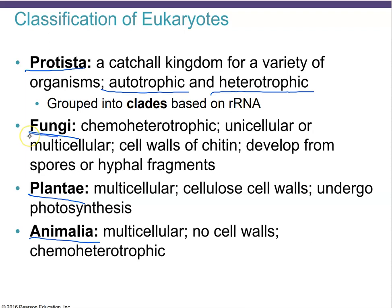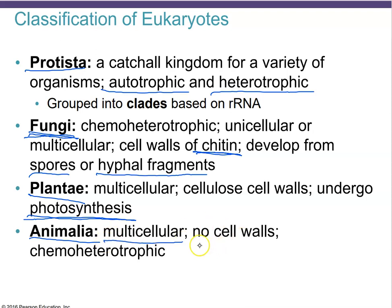Fungi are a group of chemoheterotrophic cells that can be unicellular like yeast, or multicellular like a fungus. Their cell walls contain chitin, and they develop spores and hyphae. Plants are typical green multicellular organisms with cellulose cell walls that perform photosynthesis to feed themselves. Animals are multicellular, their cells have no cell walls, and they are all chemoheterotrophic, meaning they need to feed on others.